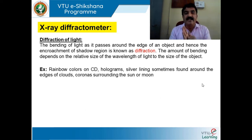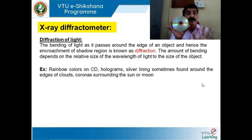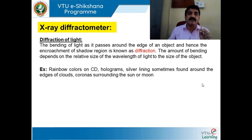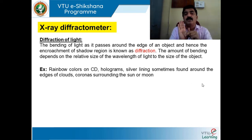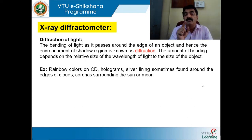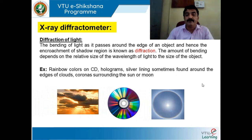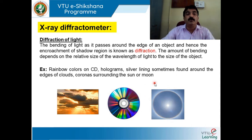Examples of diffraction include: rainbow colors produced on a CD — because the CD has tracks which act like scratches, and when light falls on those scratches it deviates and bending takes place; holograms on books, food product boxes, or mobile phones where you see beautiful rainbow colors; silver lining sometimes found around the edges of clouds; and the corona surrounding the sun or moon. These are all due to diffraction of light.